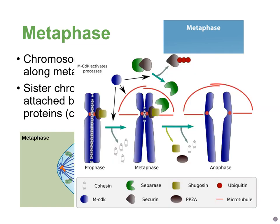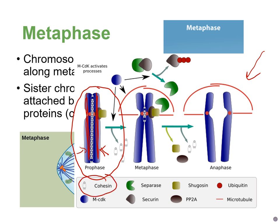Here's an example of what sister chromatids look like: identical and attached together, with cohesin proteins holding them. In metaphase, they're starting to split apart but are still held together in the middle. In anaphase, the sister chromatids are pulled apart, and the cohesin proteins must be removed before that step.